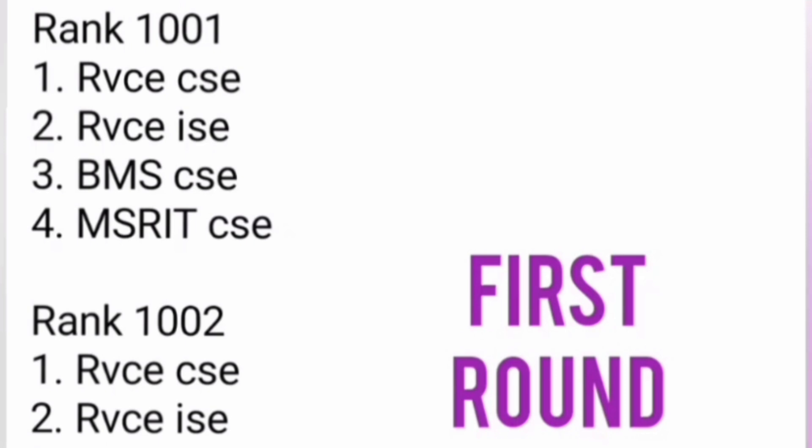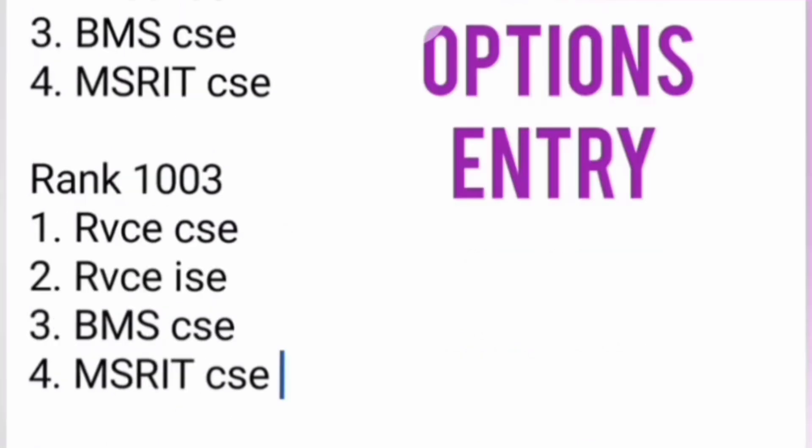Now let me show you how option entry works and how the allotment process moves from round one to round two. I am taking an example of three students. Student one has rank 1001 and added four choices: RV CSC, RV ISC, BMS CSC, and MSRIT CSC. Student two has rank 1002 and added RV CSC, RV ISC, BMS CSC, and MSRIT CSC. Student three has rank 1003 and added the same four choices.